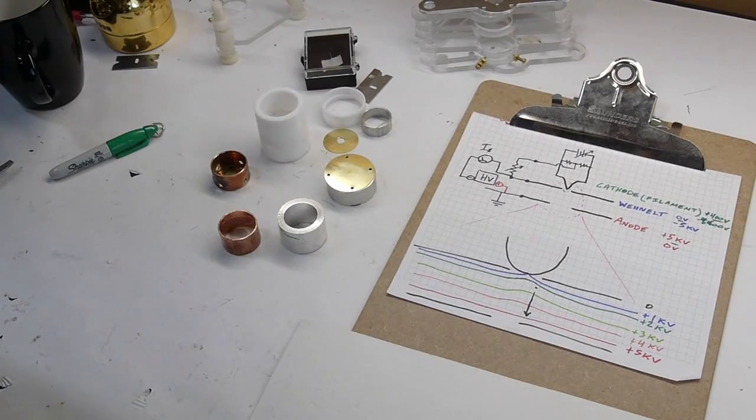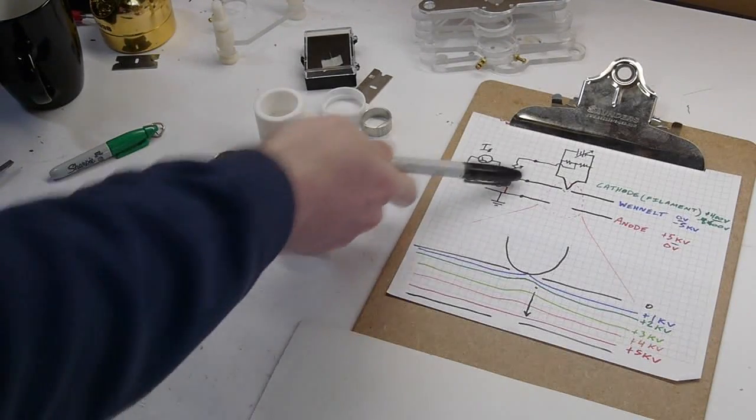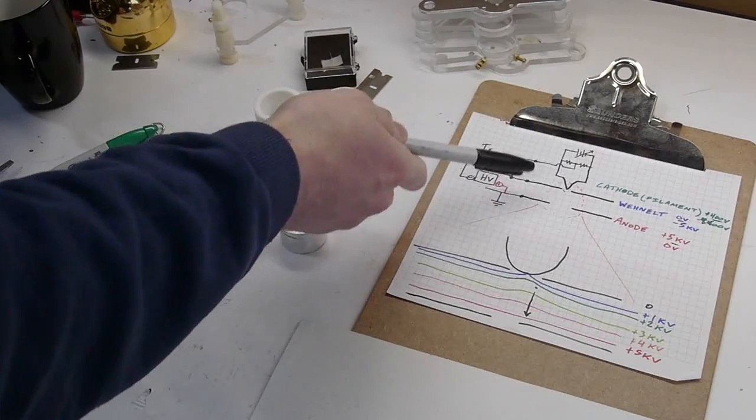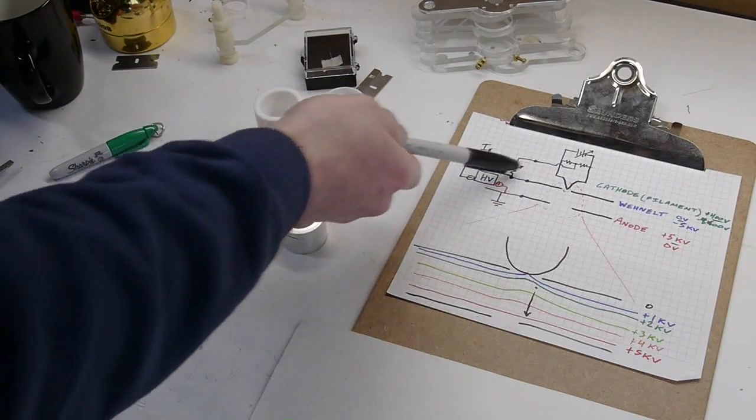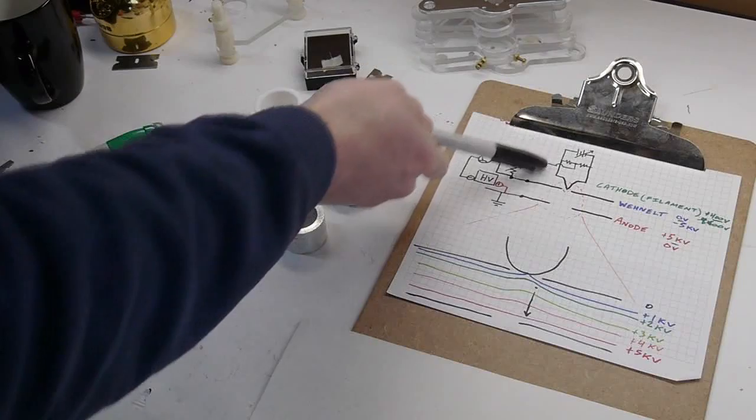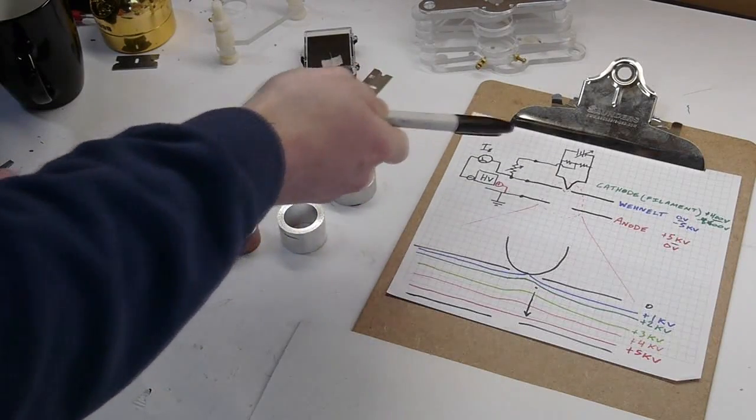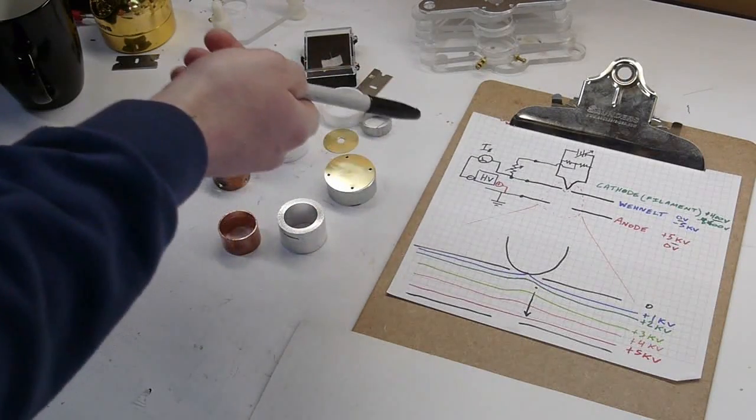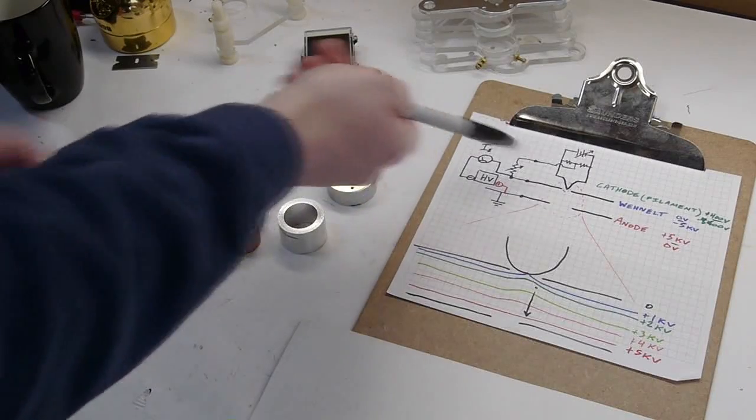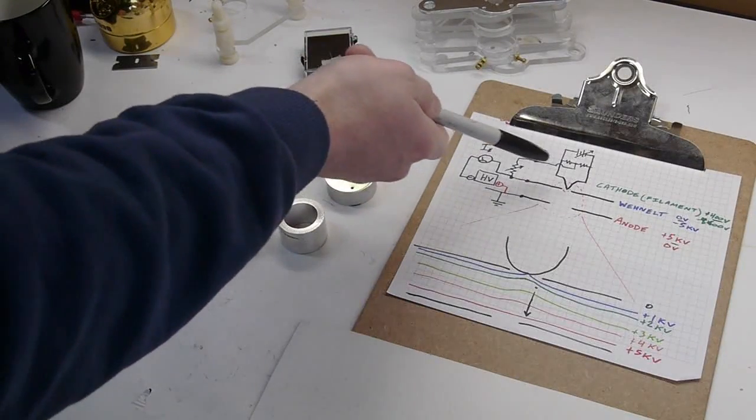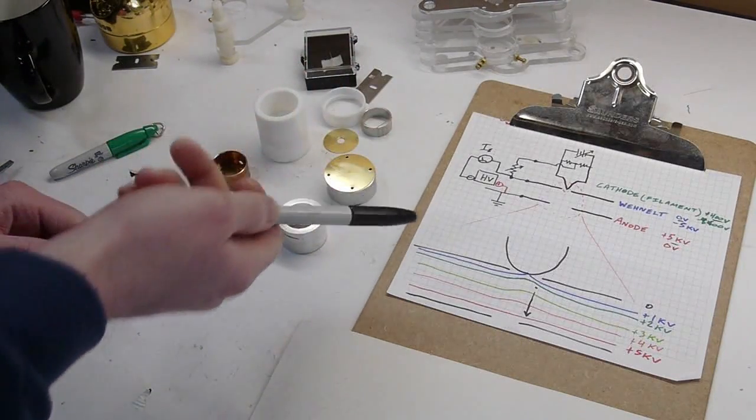Okay, so hopefully that is starting to make sense. Basically what we've got here is three different voltages on the filament, Wenelt, and anode. And I said that by adjusting this variable resistor, the voltage on the filament will change all by itself because it's emitting electrons and it will bias itself basically.